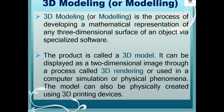3D modeling is the process of developing a mathematical representation of any three-dimensional surface of an object via specialized software. The product is called a 3D model. It can be displayed as a two-dimensional image through a process called 3D rendering, used in computer simulation of physical phenomena. The model can also be physically created using 3D printing devices.